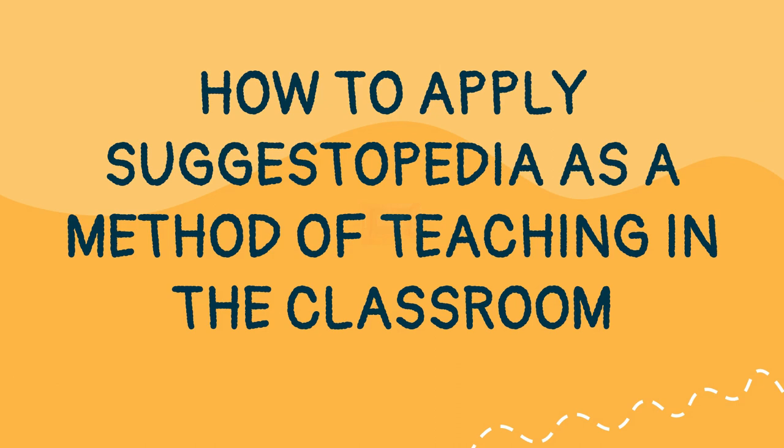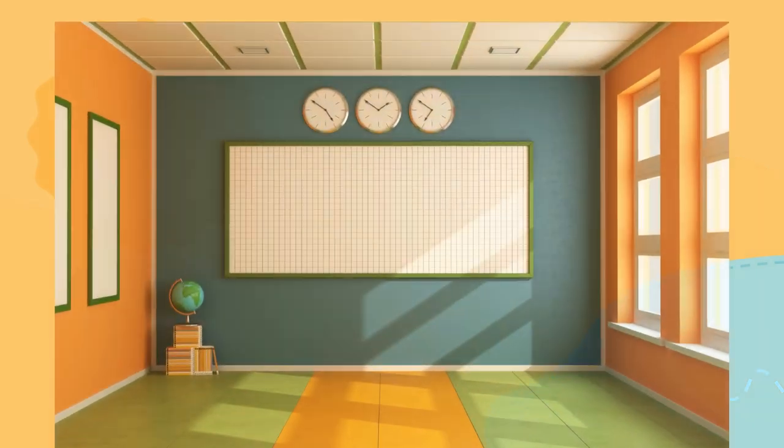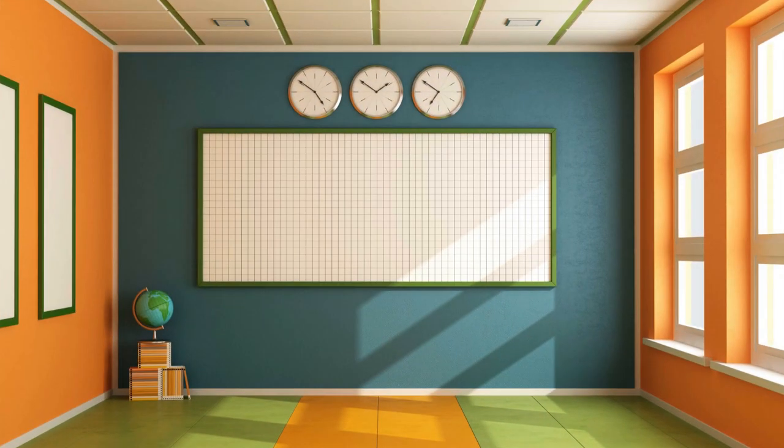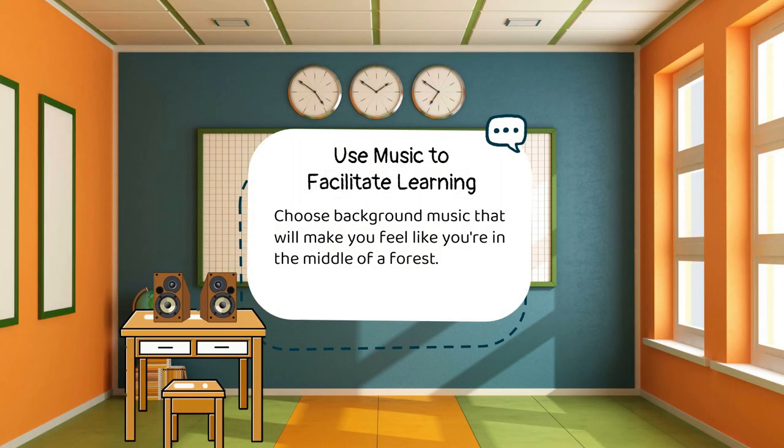Moving forward on how to apply Suggestopedia as a method of teaching inside the classroom. First, use music to facilitate learning. Choose background music that will make you feel like you're in the middle of a forest — it could be punctuated by the sounds of birds singing, leaves dancing in the breeze, or any other sound that indicates a place in the woods. Turn out the lights and put on some background music in the classroom. Then, divide the students into three groups and ask them to close their eyes and imagine they are animals, or birds, or trees, or flowers for one minute.